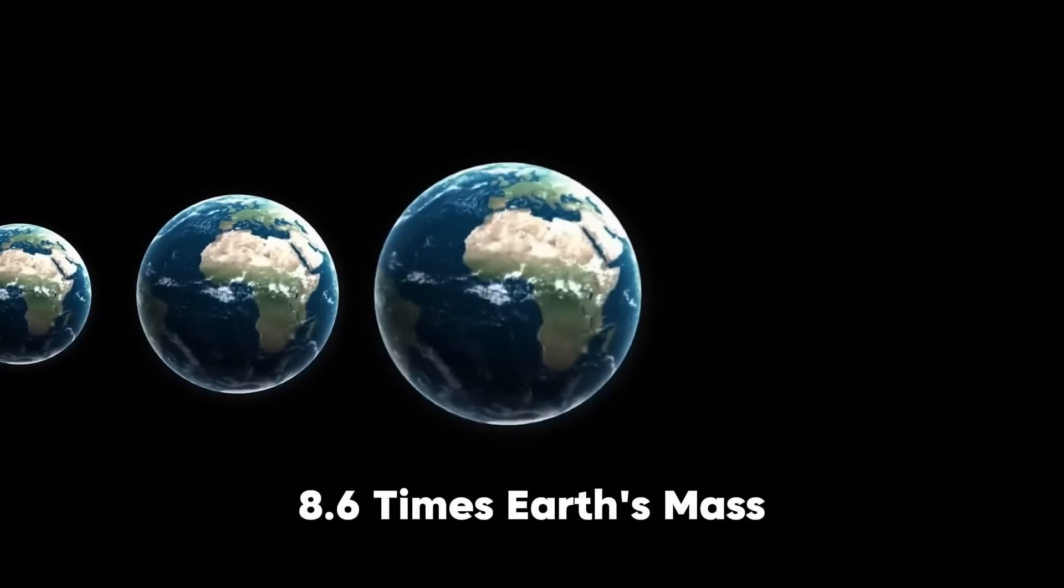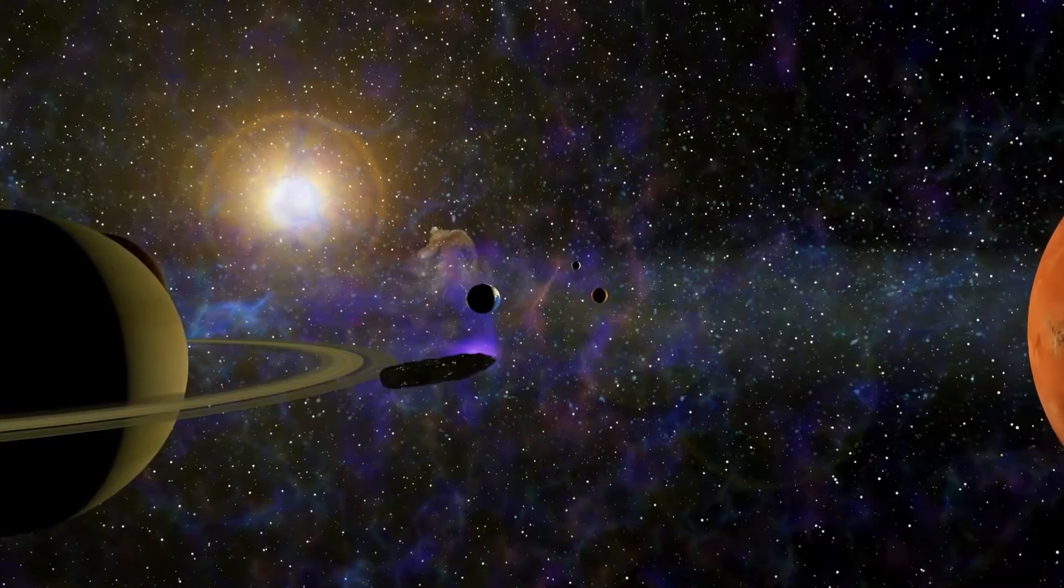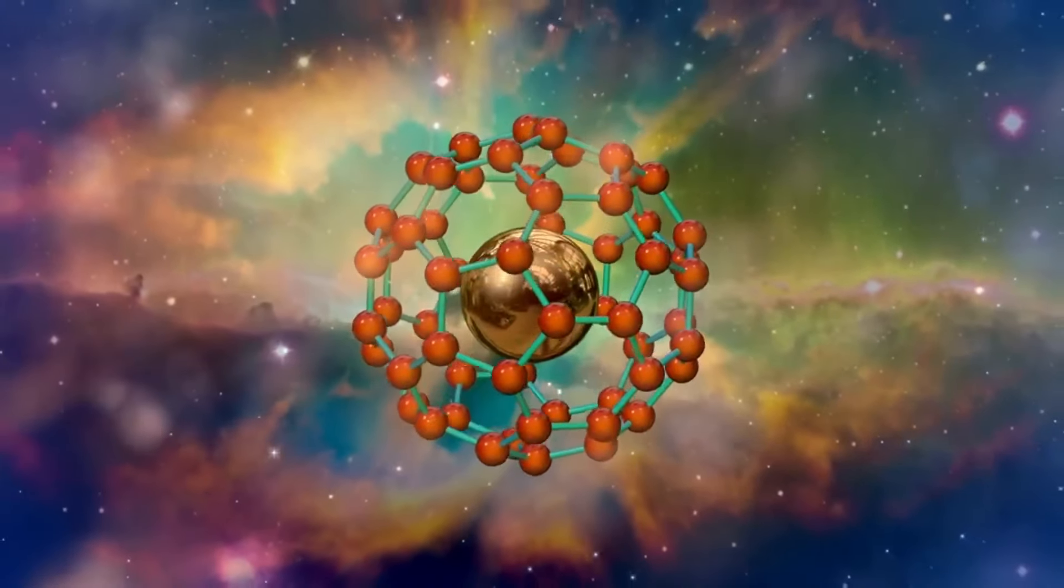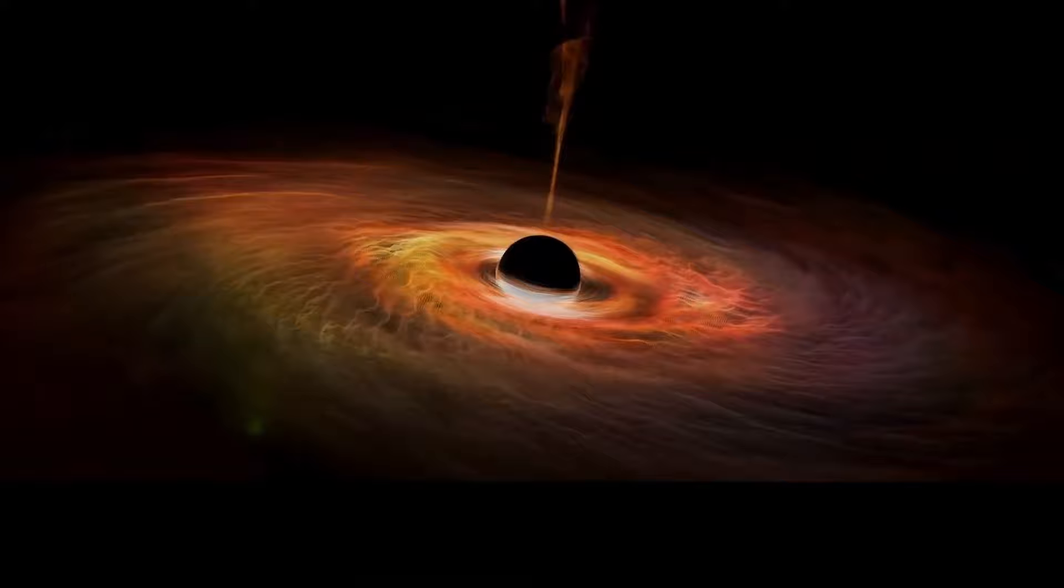Exoplanet K2-18b, which is 8.6 times Earth's mass, has been studied by NASA's James Webb Space Telescope, and carbon-bearing substances, including methane and carbon dioxide, have been discovered according to previous studies, which Webb's findings support.